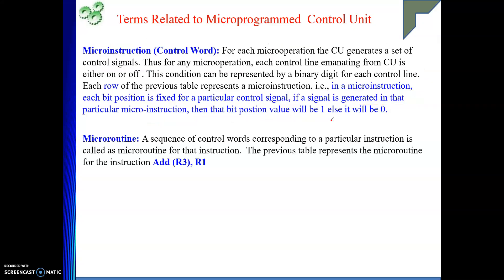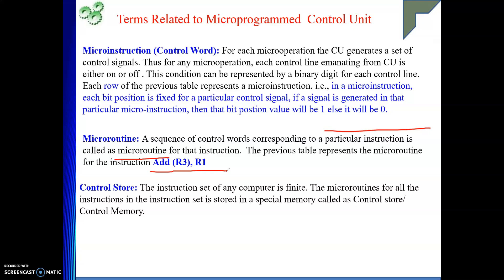The second term is micro routine. A sequence of micro instructions — or a sequence of control words — corresponding to a particular instruction is called a micro routine for that instruction. In our previous table we saw one micro routine, and it was for the instruction ADD R3, R1.